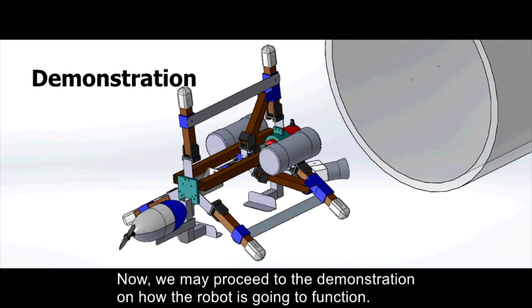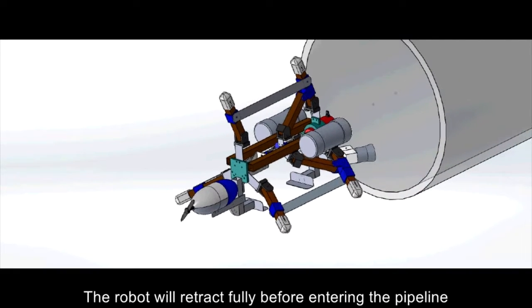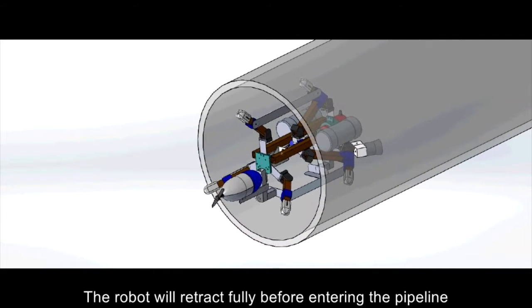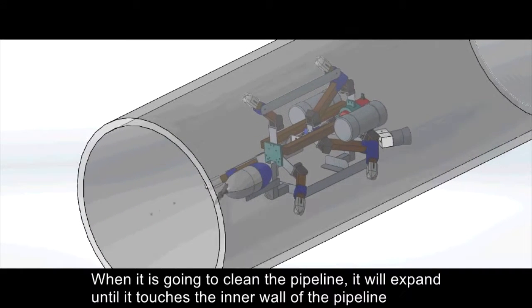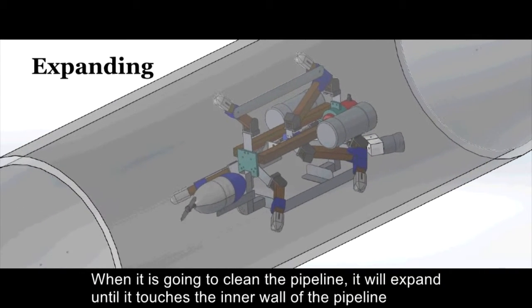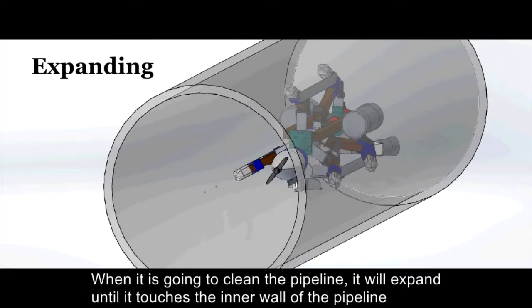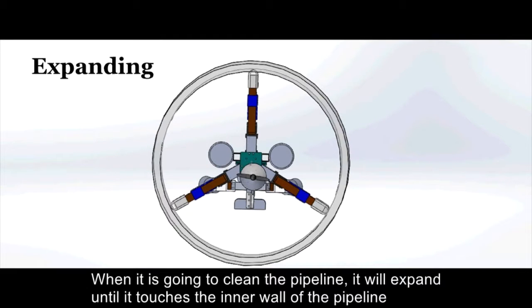Now we may proceed to the demonstration on how the robot is going to function. The robot will retract fully before entering the pipeline. When it is going to clean the pipeline, it will expand until it touches the inner wall of the pipeline.